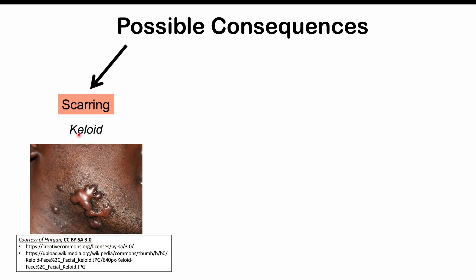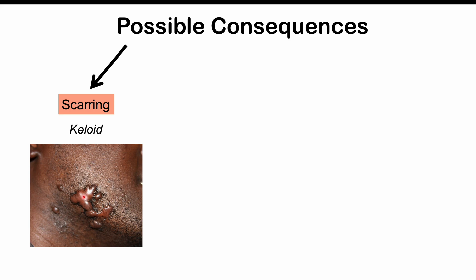There are particular consequences for having shaving bumps frequently over long periods of time. These include scarring — specifically keloid scars, where scar tissue is very thickened and overgrows past the original borders of the wound or lesion. This is more common in darker-skinned individuals. Because pseudofolliculitis barbae occurs more frequently in African descent patients, who are at higher risk for keloid scar formation, this is something to look out for and avoid.